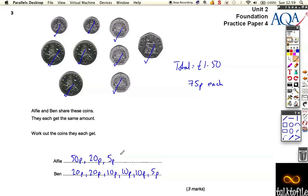And if you check you see that you have got 75p for Alfie which is what we thought and 20, 40, 50, 60, 70, 75p for Ben. Okay, so quite easy just dividing up the money, making sure they get the same amount.